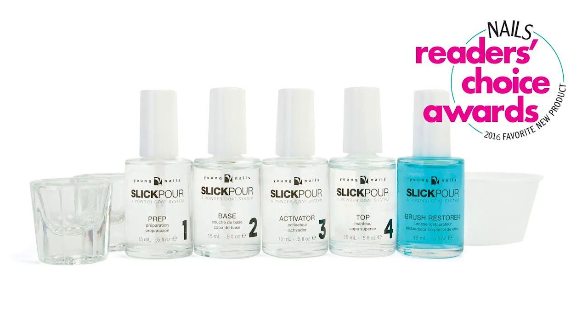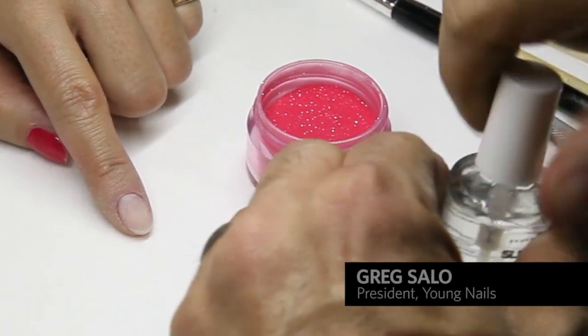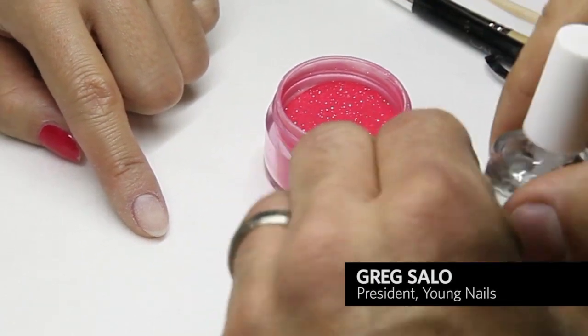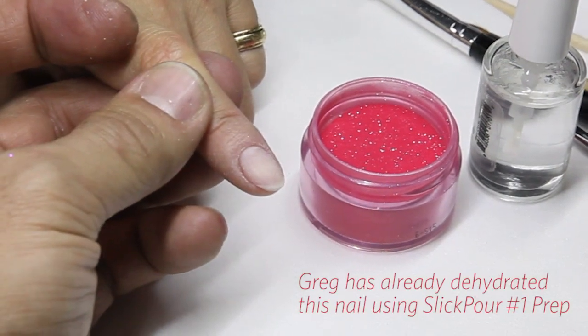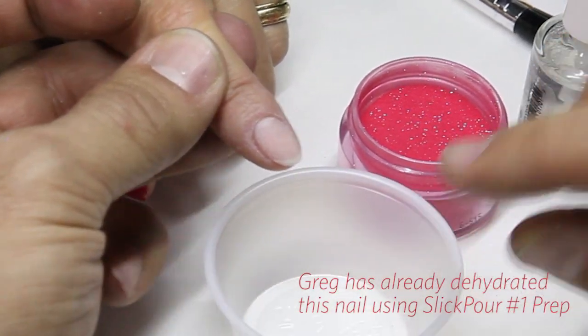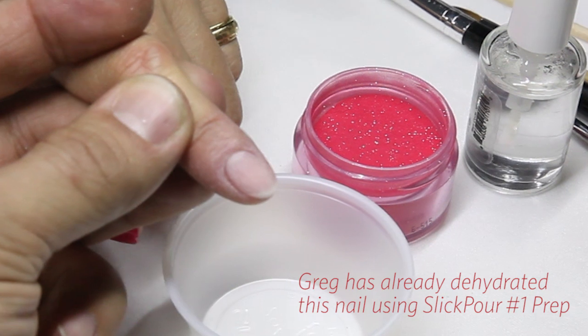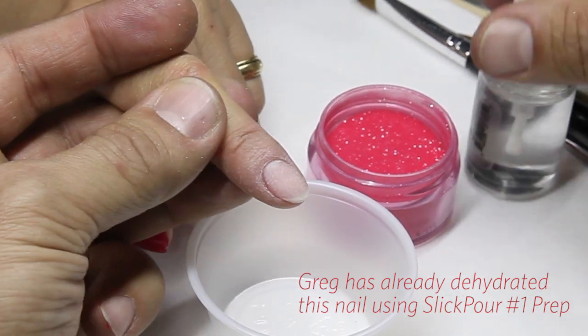The reason why hard gel doesn't lift is because hard gel is the perfect consistency. It's wet. In order for you to get acrylic to bond really well, I'm going to show you something. You can buy these at like Costco for nothing or Smart and Final. Watch this.